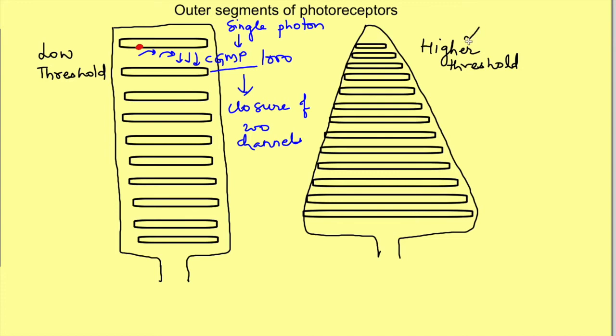Cones on the other hand require at least 100 photons since amplification of the signal is not much in cones. Thus, a single photon cannot cause closure of the channels. Hence, cones are not responsible for dark vision.